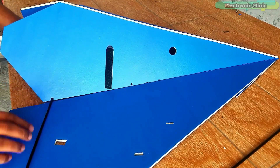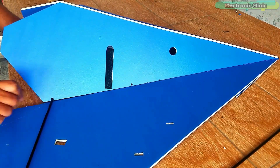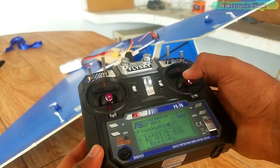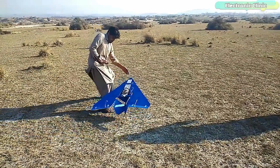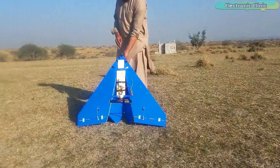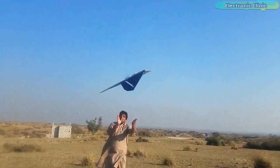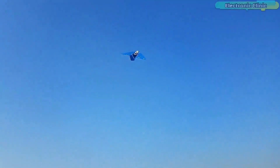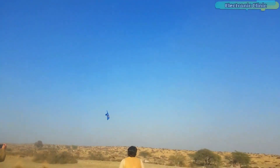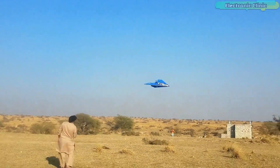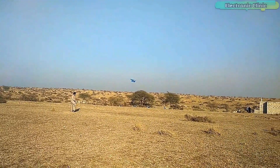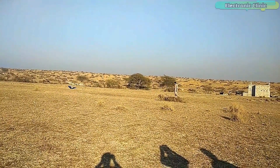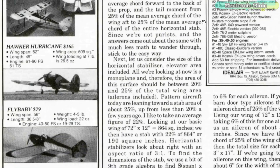In my previous tutorial I explained how to build an RC paper airplane using a ready-made template, how to set up the Flysky FS-i6 transmitter, and I also shared the flight test results. I learnt a lot of new things while working on the RC paper airplane. As this was my first time flying an RC airplane I was very happy, but still there was something missing. As an engineer I'm supposed to design my own RC airplane rather than using a ready-made template, so I started to study some research papers and watched a lot of videos.